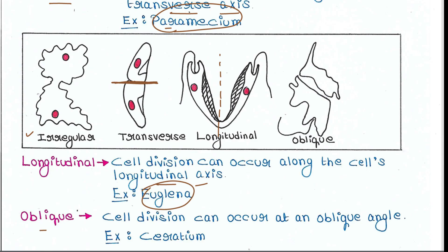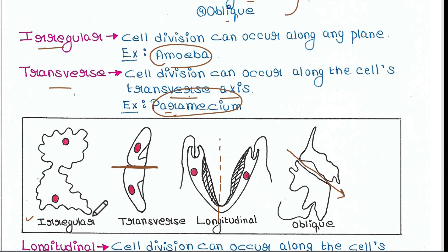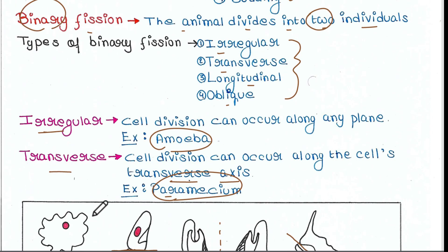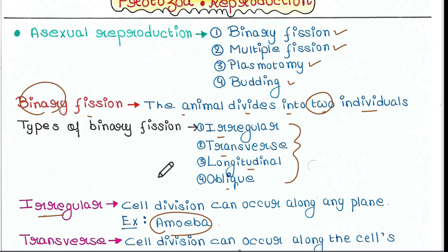Then there is oblique binary fission. Cell division can occur at an oblique angle. You can find this type of cell division in Ceratium. So these are the four types of binary fission.